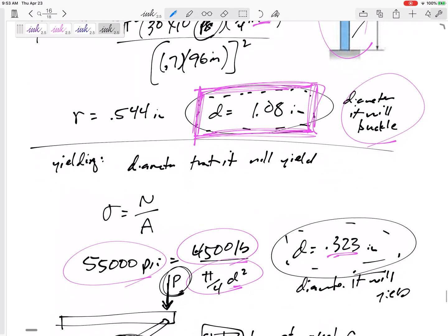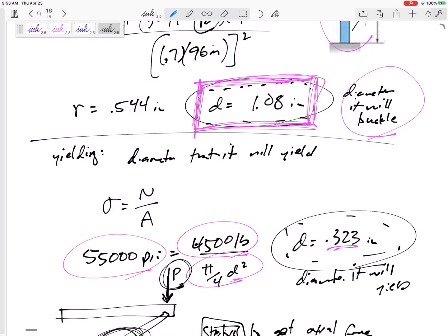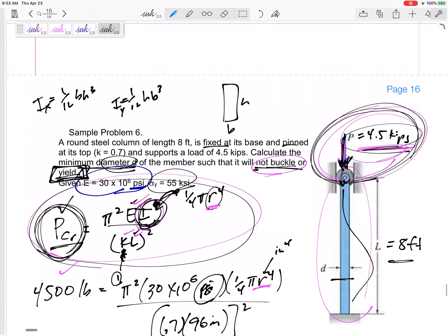Or what I did right here, compare the diameter that it will buckle and the diameter that it will yield to choose which one. I plan on asking you to test for yielding as well. I'm going to give you that yield stress right there.